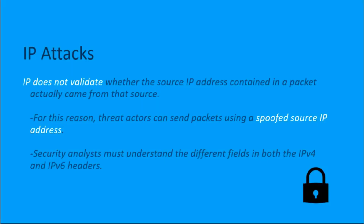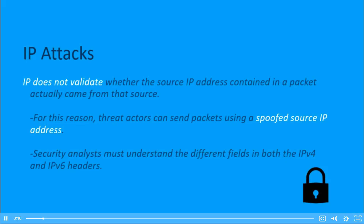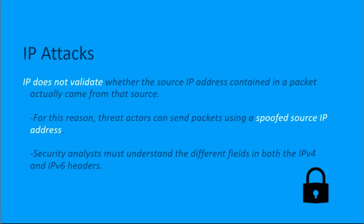Let's get in the mindset of a threat actor. We're going to talk about IPv4 and IPv6 attacks, all contained here in IP attacks. IP, or Internet Protocol, does not validate whether the source IP address seen in a packet is actually the legitimate, real source IP address for that message. Because of this, threat actors can send packets using a spoofed source IP address — they can put whatever source IP they want on the message.